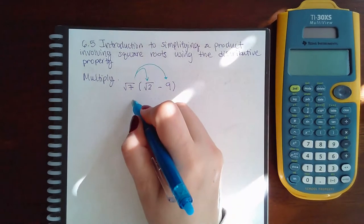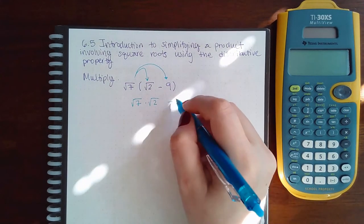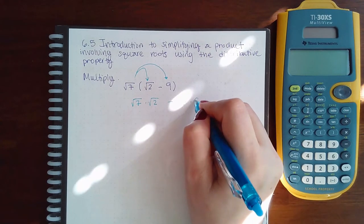So what that looks like is square root of 7 times square root of 2 minus square root of 7 times a regular 9.